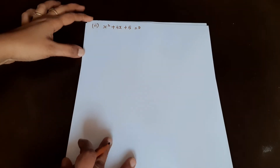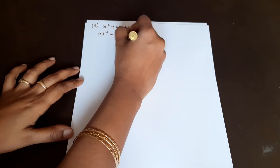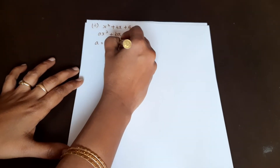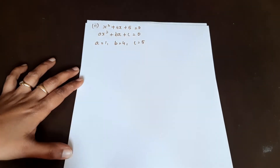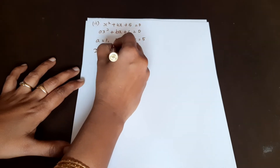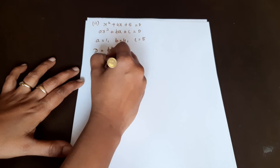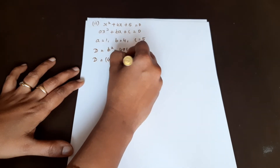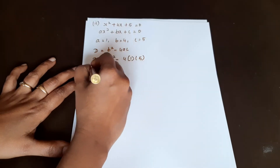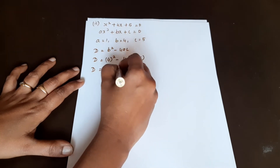For the next part, the quadratic equation has coefficients: a is equal to 1, b is equal to 4, c is equal to 5. The next step: D is equal to b squared minus 4ac. So D equals 4 squared minus 4 times 1 times 5, which is 16 minus 20.